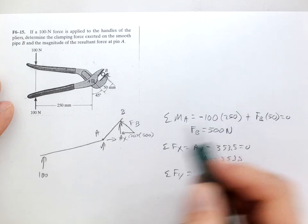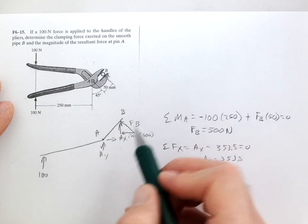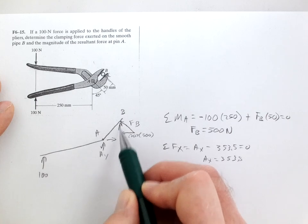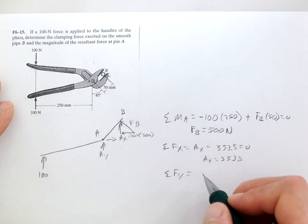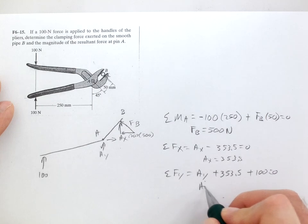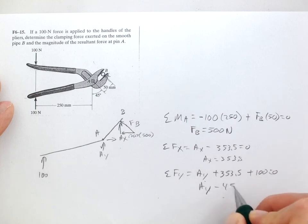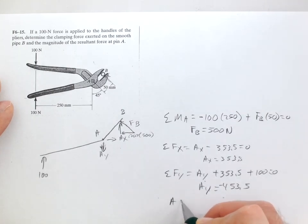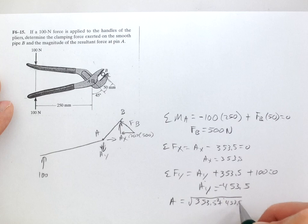Sum the forces in the y direction: we have Ay plus the y component, which is the same since it's a 45 degree angle. So Ay plus 353.5 plus 100 equals zero. Ay is negative, 453.5 downward. The force at A equals the square root of 353.5 squared plus 453.5 squared, which equals 575 newtons.